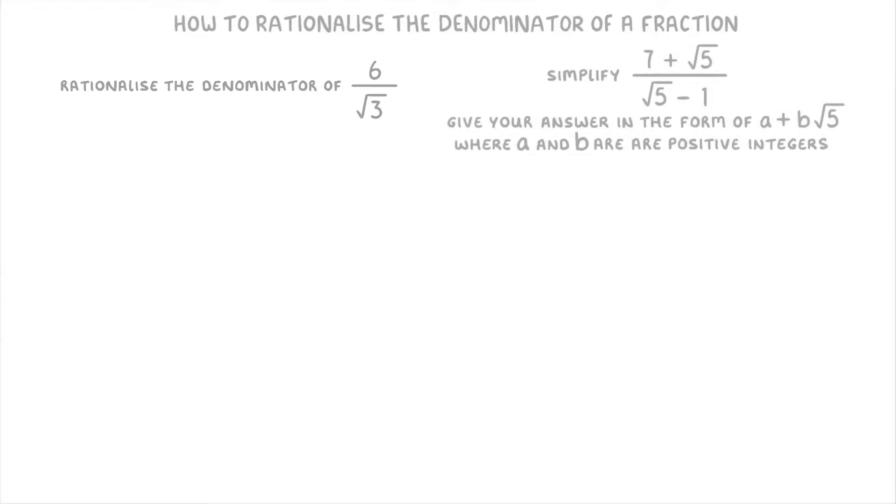Let's try a couple more. In this first one, we need to rationalize the denominator of 6 over root 3. So the first thing is to take the 6 over root 3, and multiply it by root 3 over root 3, which gives us 6 root 3 as the new numerator, and just 3 as the new denominator.